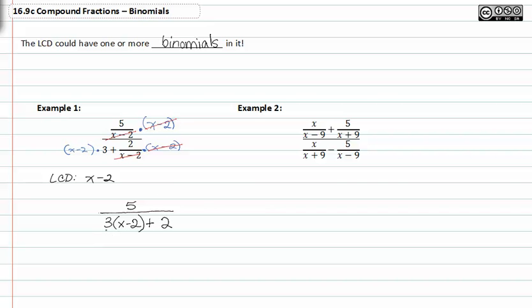Now, we can distribute the three through to get five over three x minus six plus two. Combining like terms, we now get five over three x minus four.